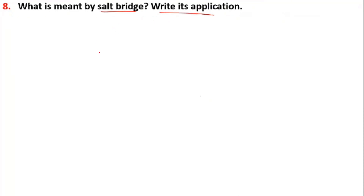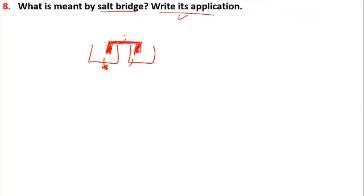Another topic is the salt bridge and its application. This is called the salt bridge. We have to maintain electrical neutrality in the half-cells internally with the salt bridge. It is a bent U-shaped tube filled with salts like KCl, KNO₃, or NH₄NO₃. It is placed in between the two half-cells, allowing ion movement. It helps to maintain electrical neutrality in the two half-cells connected as anode and cathode.